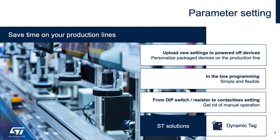Let's dive a little deeper into the use case of a dynamic programming tag on your factory production line. It could be used on the factory line to eliminate dip switches or resistors used to configure a product for different SKUs. It's also really powerful at the end of the factory line if you want to change things in a product that's perhaps already been boxed up.